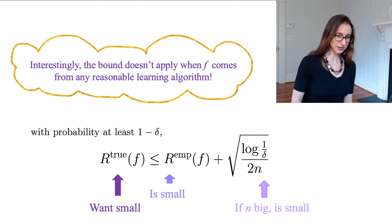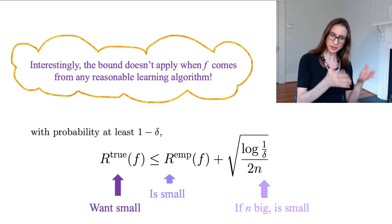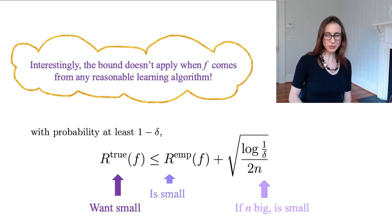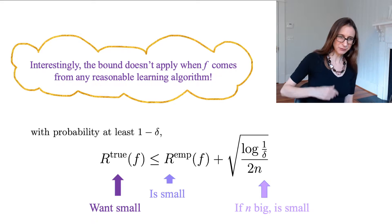So here's the bound we get from Hoeffding's inequality, which says that with high probability we got a handle on the true risk. So that's what we wanted. So what's wrong with that? Why, where does that go wrong?